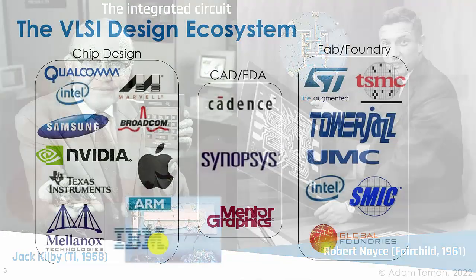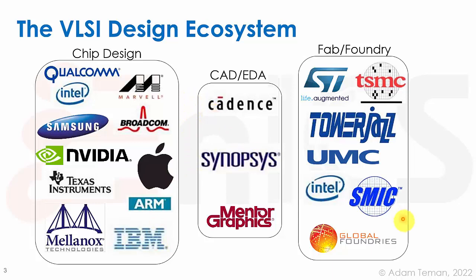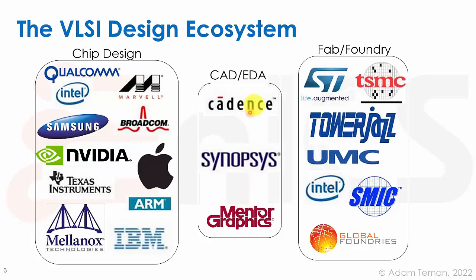Going back to the VLSI design ecosystem: the foundries or fabs actually make the technology. The biggest foundry is TSMC — a pure play foundry, meaning they provide technology and make transistors for others. It's similar to a printer who doesn't write the books. The chip design companies — mostly fabless — are the authors. The CAD and EDA companies provide the word processor. The fabs are the printing press.